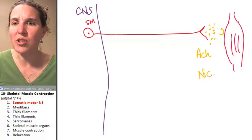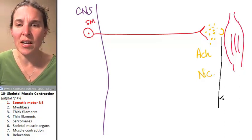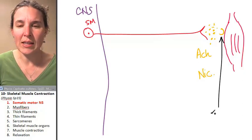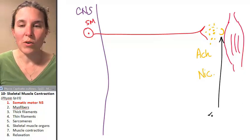And those receptors are actually found in a specific area of the skeletal muscle. It's called the motor end plate.